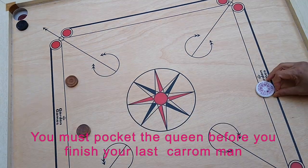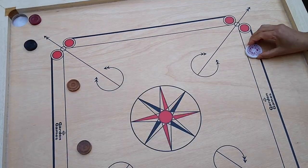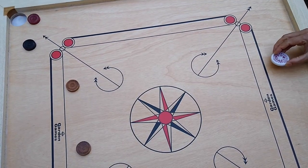You must pocket your queen before you finish your last carrom man. If you fail to pocket a carrom man after the queen, you have to replace the queen.